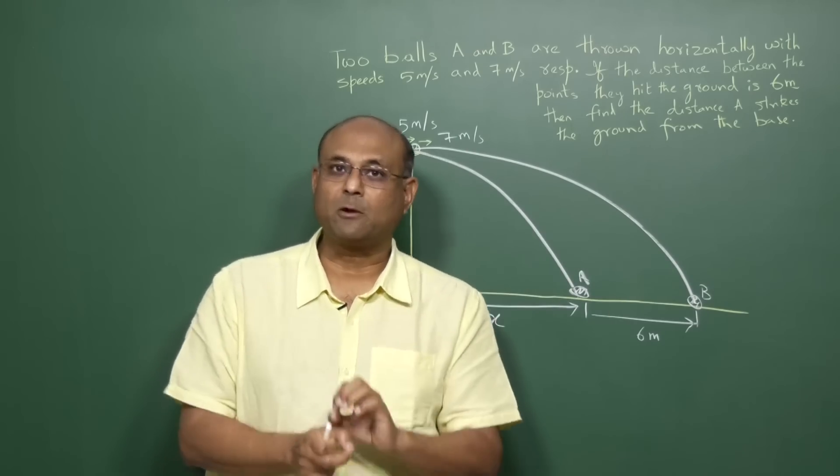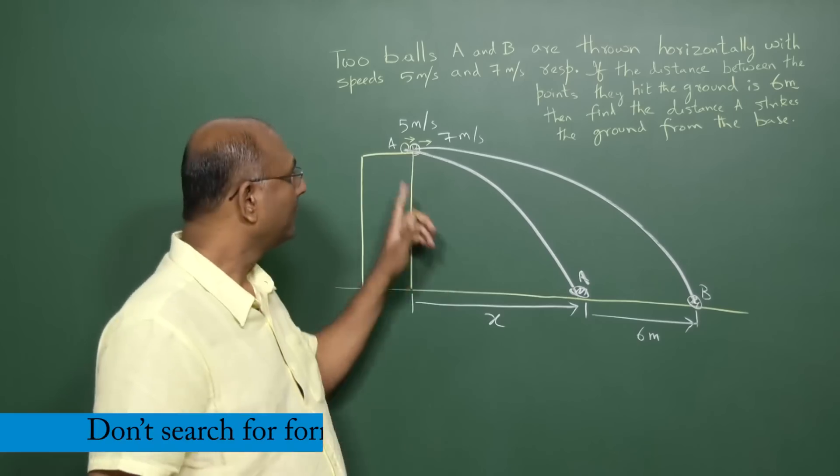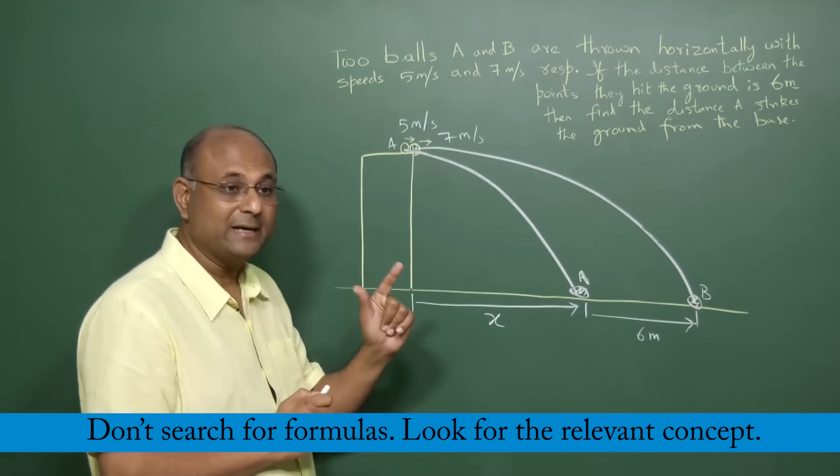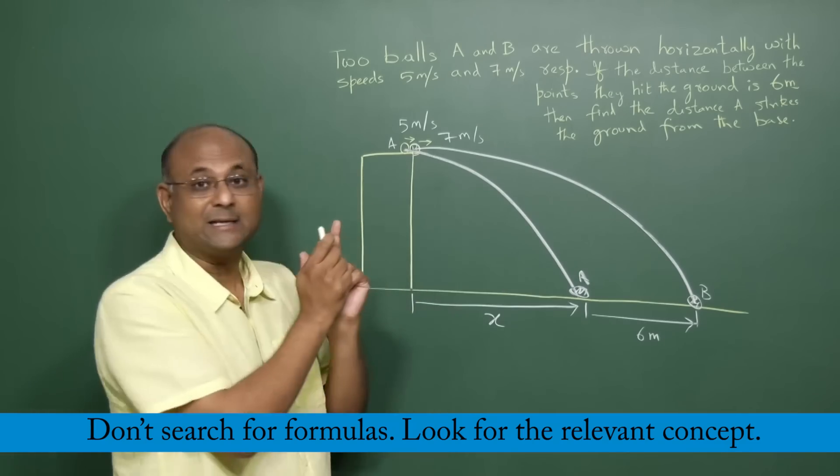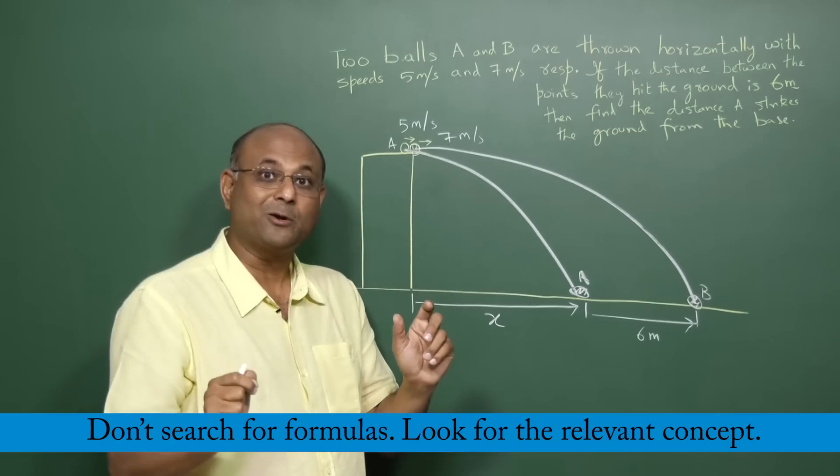So now once you have drawn the diagram, understood what the problem is, then you start thinking about what is the best concept to use. You can look for formulas from projectile motion, that's not the best way to go about this. Instead, if you focus on the key idea that is there in projectile motion when you throw objects horizontally, what is the single most important idea in projectile motion?